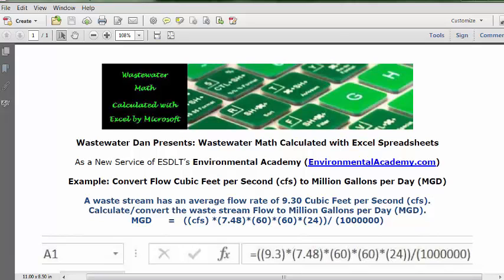Today's problem reads: a waste stream has an average flow rate of 9.30 cubic feet per second (CFS). Calculate/convert the waste stream flow to million gallons per day (MGD).